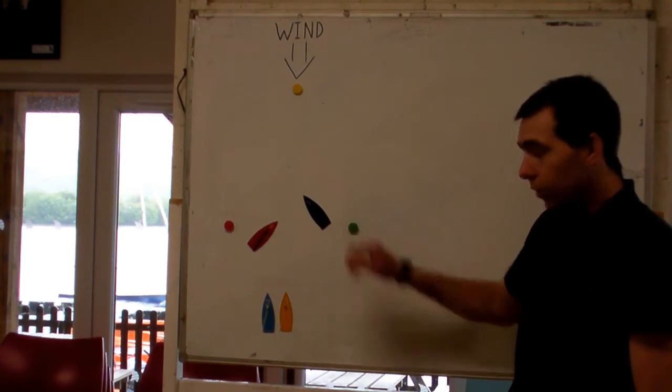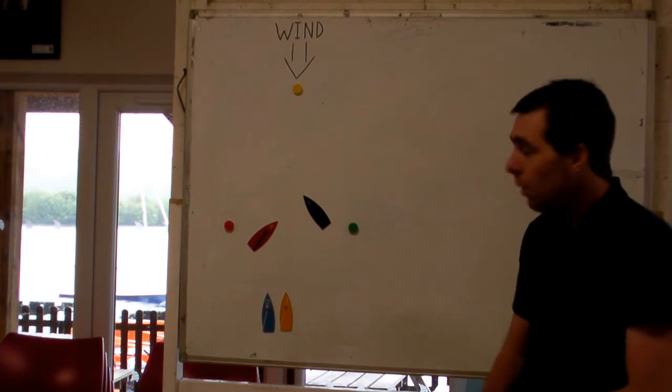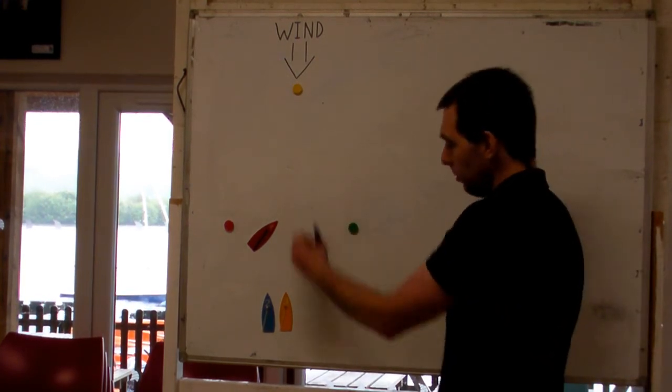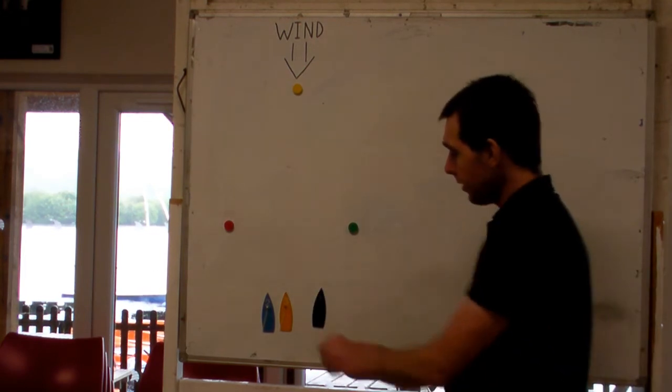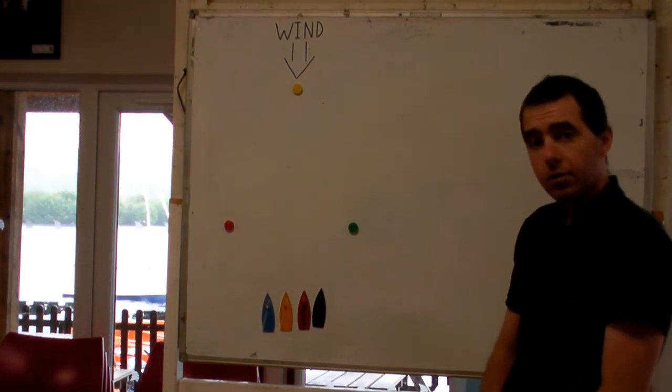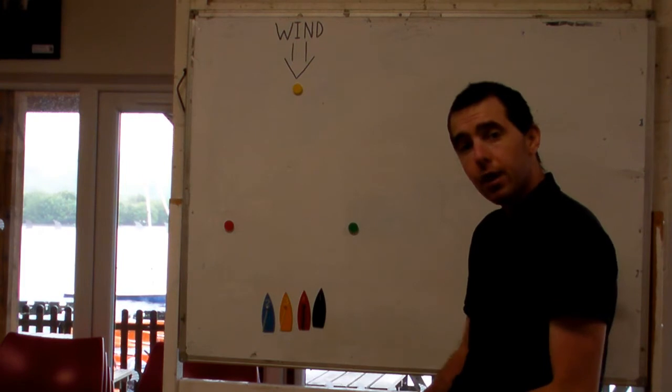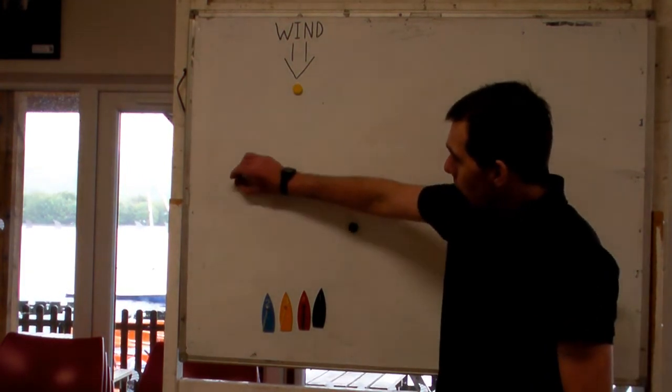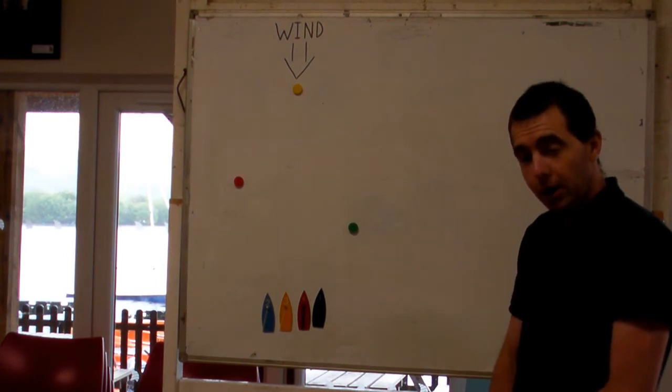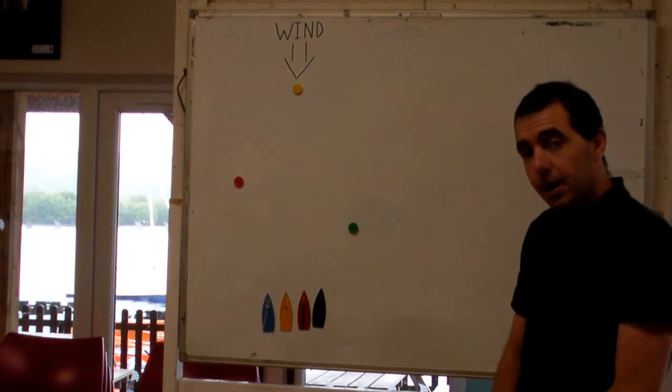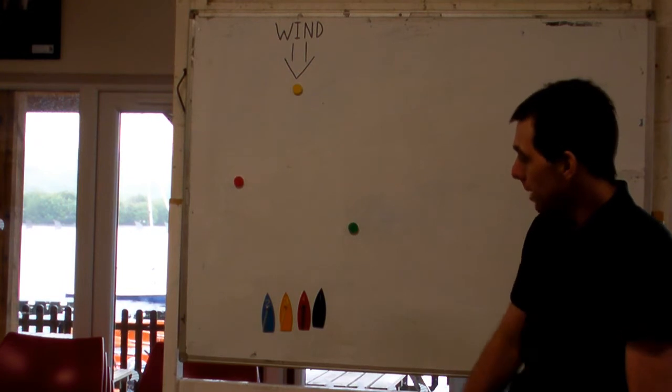Generally speaking, people start on starboard from the starboard end. However, sometimes our start line won't be laid out nicely at 90 degrees to the wind like this. Sometimes one end or the other is closer to the wind. And if you've got the port end closer to the wind, so the line's got a port bias, it can sometimes pay to start on port tack from that port end.